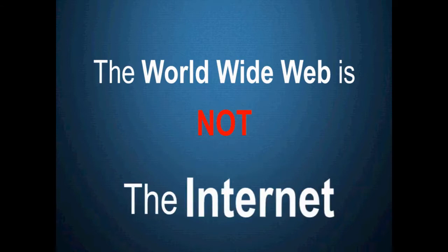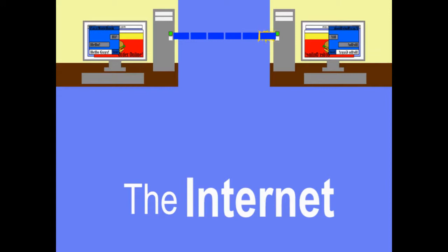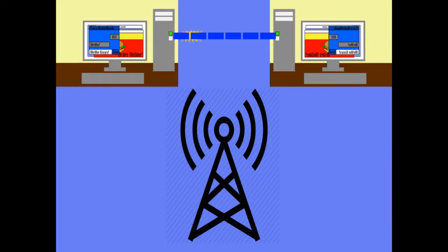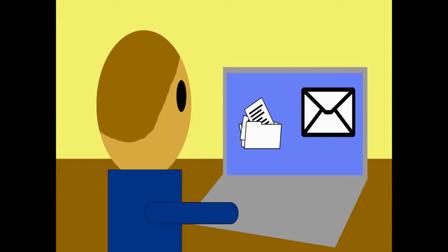The World Wide Web is not the Internet. The Internet is simply the way computers connect to each other in order to share information. When the Internet first emerged, computers actually made direct calls to each other. Today, networks are all around us, so computers can communicate seamlessly. The communications enabled through the Internet have many uses, such as email, file transfer, but the most common use is accessing the World Wide Web.